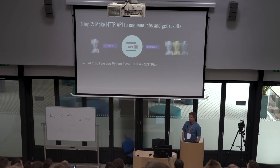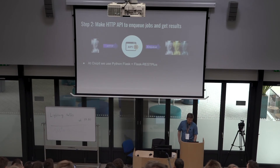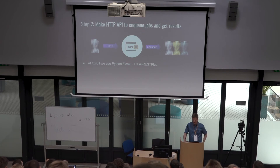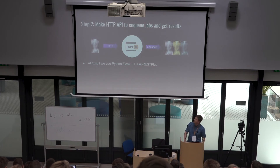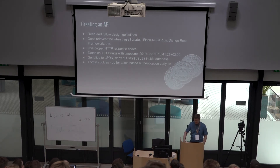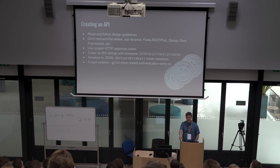Next is to create an HTTP API to enqueue jobs. Why? You want integrations between systems and an HTTP API is the de facto standard we can use. In OxyPit, we use Flask, Flask-RESTful, and REST Plus. When creating an API, I'd really urge you to invest more time and follow the design guidelines. If you have deployments and users of your API, you get stuck with it and it gets really difficult to change.